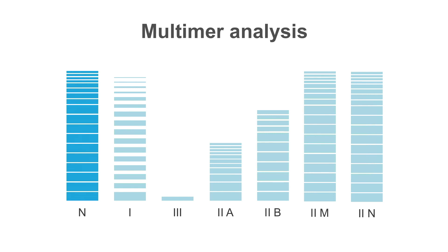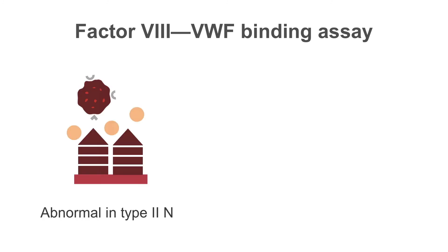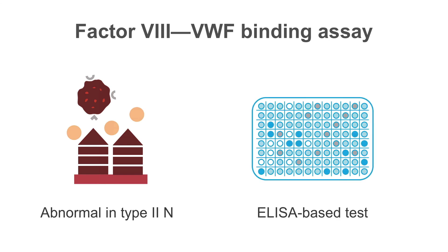To diagnose type 2N, there is a factor 8 von Willebrand's factor binding assay. In type 2N the binding of von Willebrand's factor and factor 8 is abnormal, resulting in easy degradation of factor 8. Low levels of factor 8 in such patients can make us think of hemophilia. This assay is an ELISA-based test and is usually sent out to a reference laboratory.